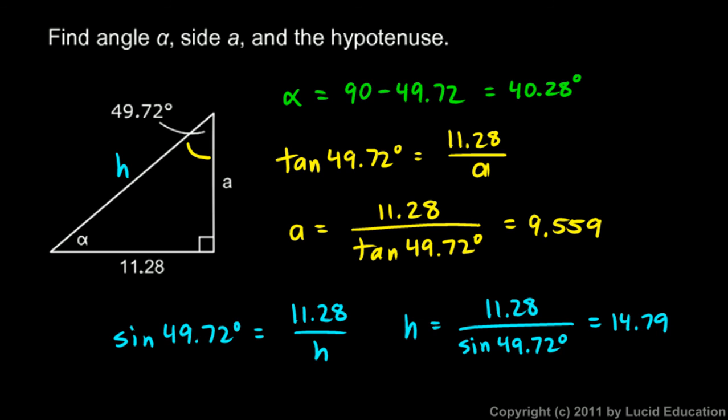One other thing I'll point out is that these original numbers were given with four digits of accuracy, so I gave my answers to four digits of accuracy. There are some specific rules that you will probably go over in science class, and that we do in physics and chemistry, that tell you exactly where you should round numbers to based on the given information. But as a general rule of thumb, you want your answers to be about the same degree of accuracy as the given info. Because these were given to four digits, I rounded these answers to four digits.